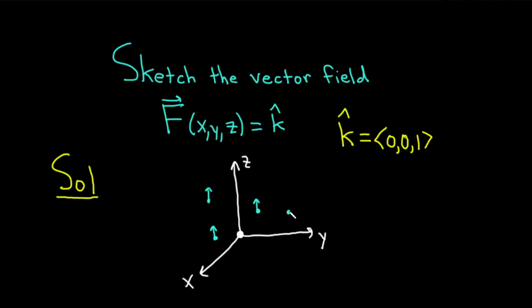So you just have infinitely many vectors and they're all the same length. That one's a little bit longer, but they're all supposed to have a length of 1 and they all go straight up. So this would be a rough sketch of the vector field F(x, y, z) = k-hat.